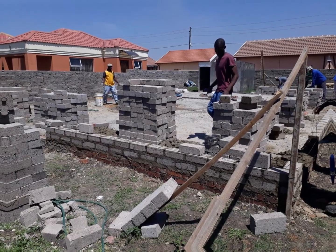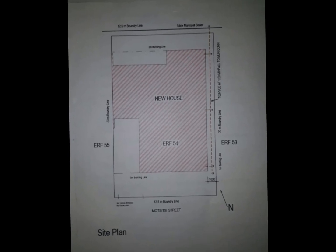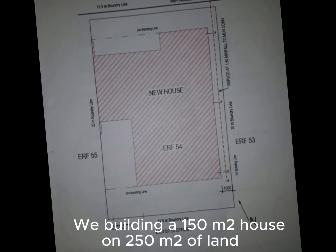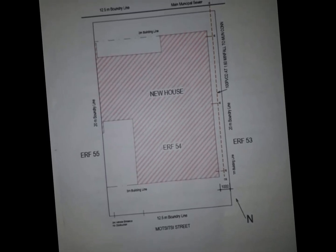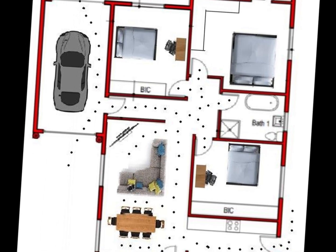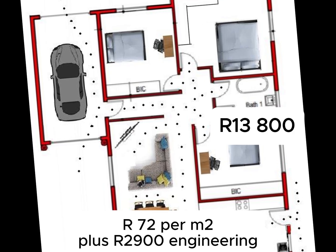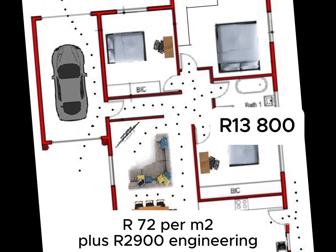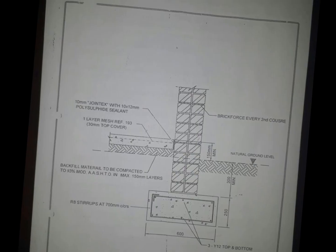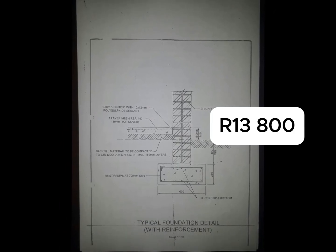Everything starts off with a plan. The plans have to go through the municipal councils and be approved, but most importantly you also need to appoint an engineer for the drawings so that your drawings are approved by the engineer as well. The drawings came to about 72 rand per square meter. Because this house was 150 square meters, the total cost for the drawings was 13,800 rand — though we're keeping that in isolation as it's not the focus here.